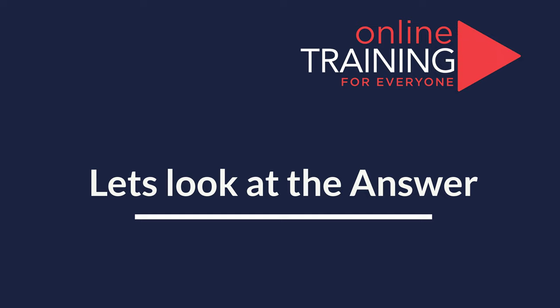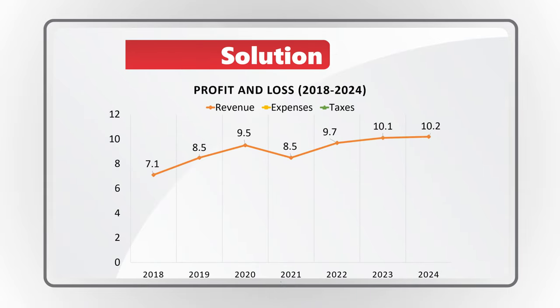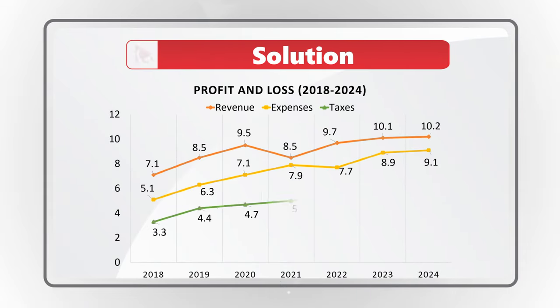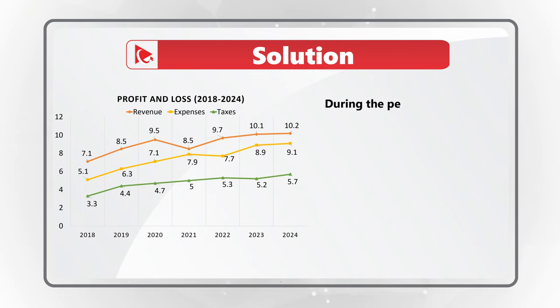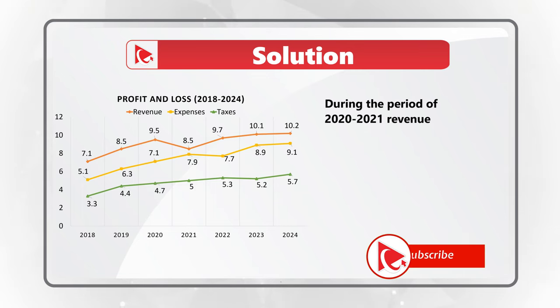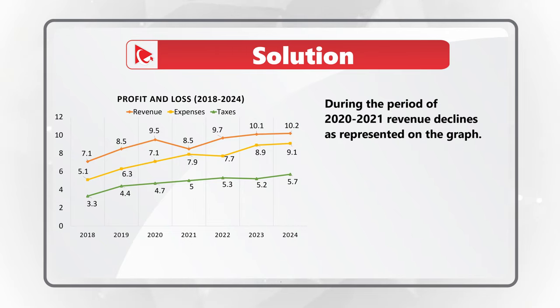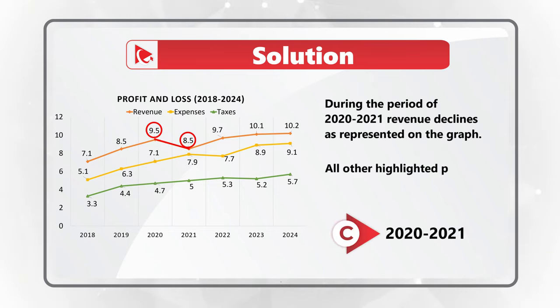I'm pretty sure that by now you found it, but I'm going to move forward and reveal my version of the solution anyway. If you know a better way to solve it, please post in comments. The way I see it, the revenue goes down between the period of 2020 and 2021, which is represented by the blue line. In 2020, the revenue was about 9.5 units, and then in 2021 it went down to approximately 8.5 units. All other highlighted periods indicate revenue increases.